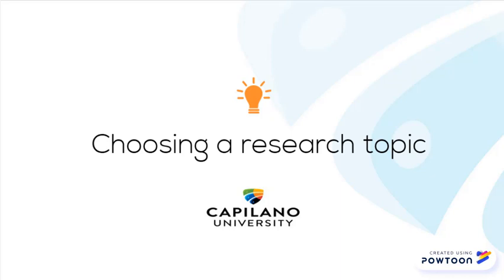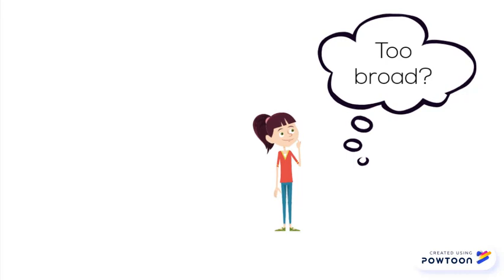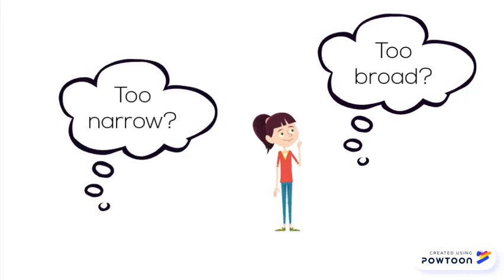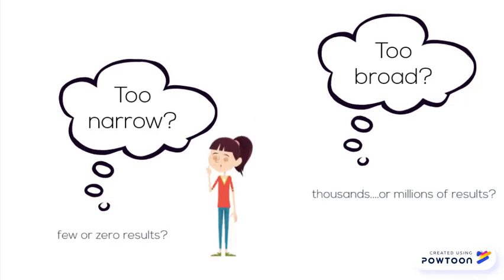For most classes, one of the first things you have to tackle in a research assignment is choosing your topic. But it's not always easy to settle on a topic that isn't too broad or too narrow to research. If it's too broad, you'll get thousands or even millions of results covering many different aspects of the overall topic. If your topic is too narrow, you may get few or no results at all.